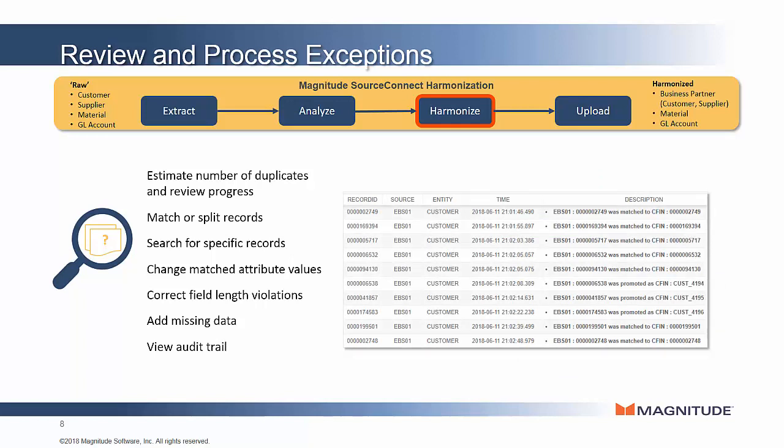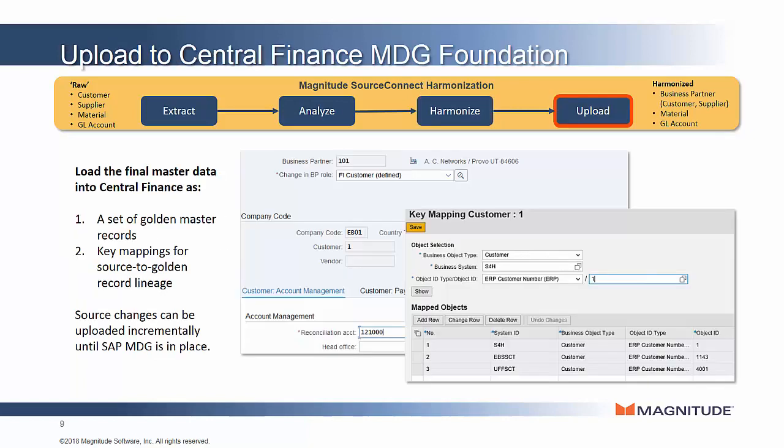Once a set of records is fully harmonized and corrected, it's ready to load into Central Finance. SourceConnect Harmonization calls the correct APIs in Central Finance to do two things: first, to upload the golden records into Central Finance to create the customers, vendors, and materials; and second, to load the source-to-golden-record lineage into the key mapping area of the MDG foundation. Both the golden records and lineage or key mappings are required for transactions to post properly into the Universal Journal.